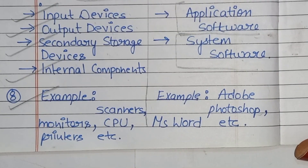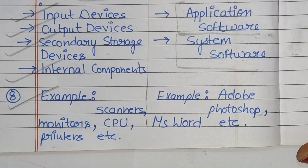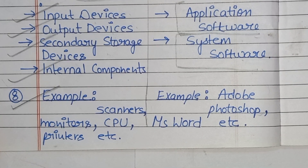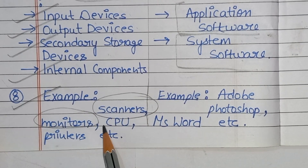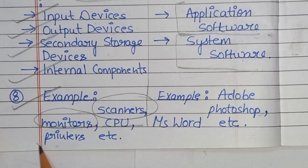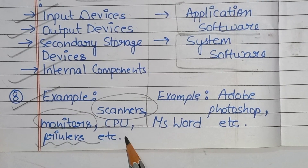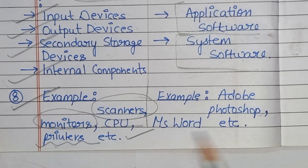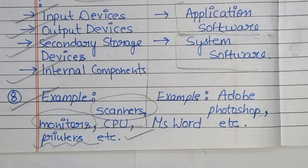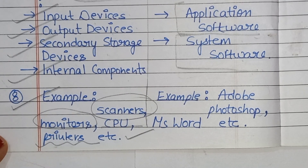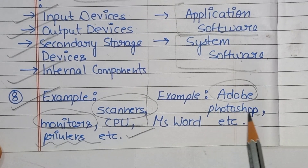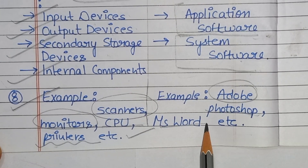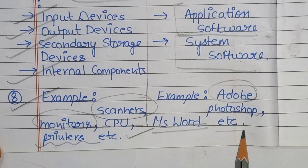Examples: hardware ki examples hain — scanners, monitors, CPU, printers, etc. Or software ki examples hain — Adobe Photoshop, MS Word, etc.